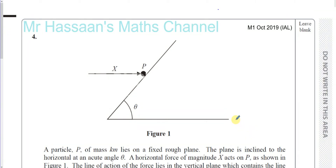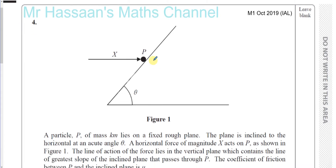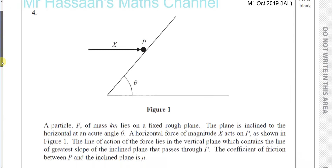Now for M1 2019 October exam. We're going to start with question number 4. This is an international A-level exam from Edexcel. Question number 4 says: a particle P of mass Km lies on a fixed rough plane, so there's going to be friction involved here. The plane is inclined to the horizontal at an acute angle theta. A horizontal force of magnitude X acts on P as shown in figure 1. The line of action of the force lies in the vertical plane which contains a line of greater slope of the inclined plane which passes through P.